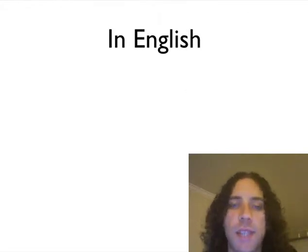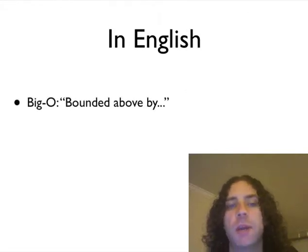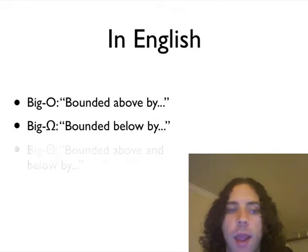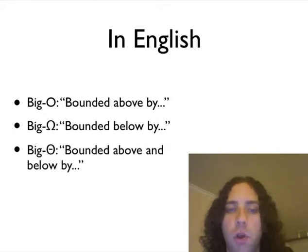So in English what do these things actually mean? Well big O means, like I said before, bounded above by. Whereas big omega is bounded below by. And big theta, of course, being the bounded above and below by.